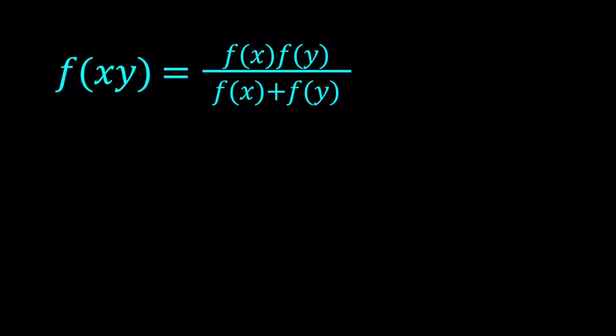Anyways, let me not give you any more at this point. Maybe some of you already guessed the method here or you already know, maybe you're already familiar. Now, we have f of xy and that is equal to f of x times f of y divided by the sum f of x plus f of y.